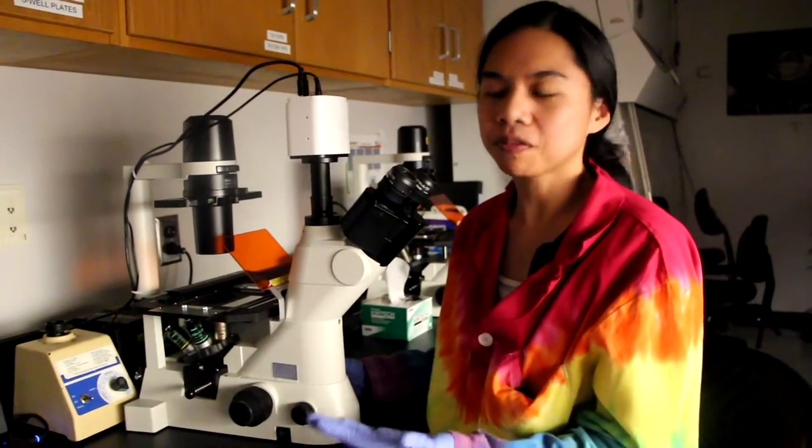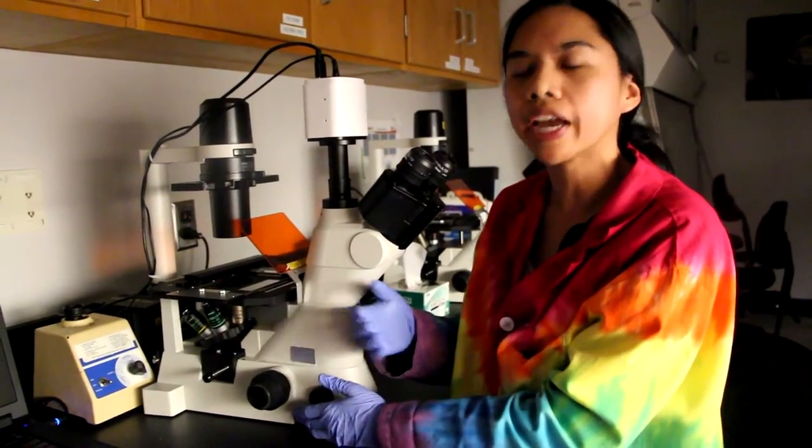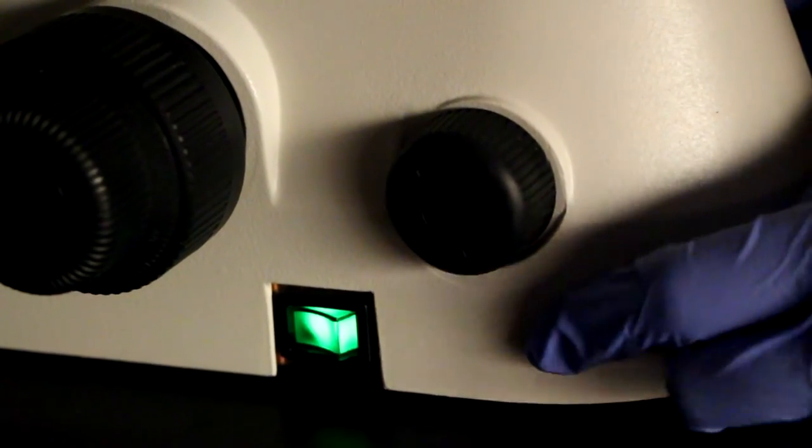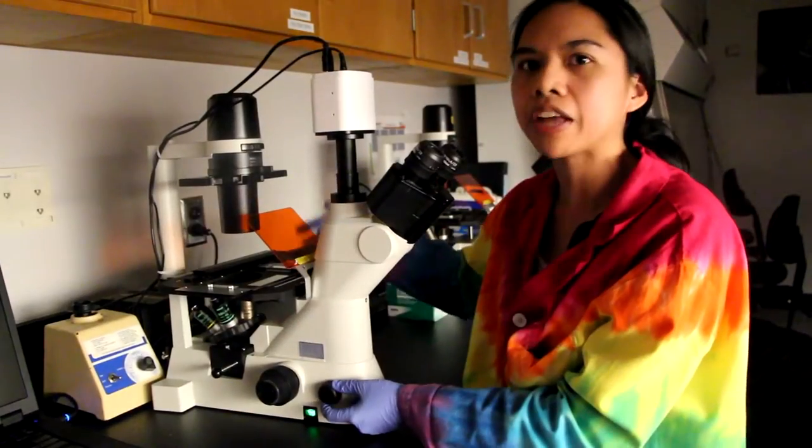Obviously we need to turn on our microscope, first of all. So in order to turn on the bright field or the white light, the switch is right here, the screen switch. And then there's also this dimmer knob, which can actually change the intensity of the white light that's passing through the sample.